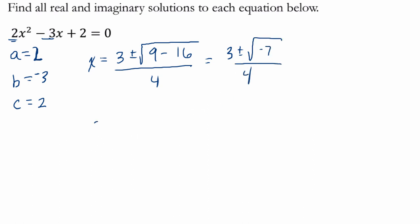So we can write two answers here. The first one I would write is 3 plus i times the square root of 7 over 4. The other one is 3 minus i times the square root of 7 over 4.